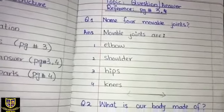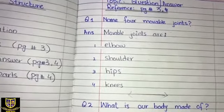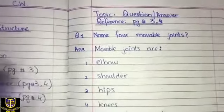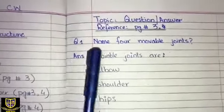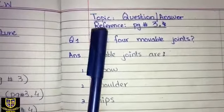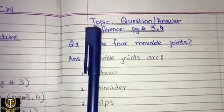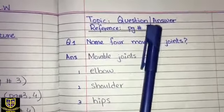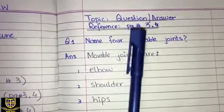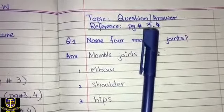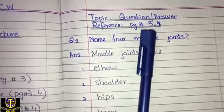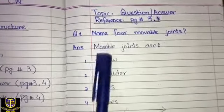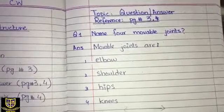On the next page, we have drawn a margin line and page number 3. You have to take the ending line. Then you have to write the topic and reference. The topic is question and answers, reference page number 3. There are question and answers on page number 3.